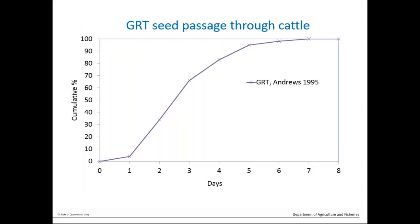Most of the Giant Rat's Tail Grass is in cattle areas — either dairy cattle or beef cattle. How long does seed take to move through cattle? We're looking at seven to eight days, which is a significant period. So if I'm moving livestock around my property and they're going through a Giant Rat's Tail Grass area, they'll be passing seed for seven days after I move them out of that area. That needs to be considered in terms of how we move livestock around, how we graze, and when we shift them off property.